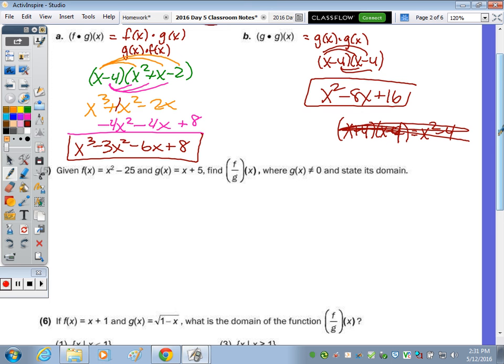Number 5. So we're going to divide polynomials. So we're going to take the F of X function, which is X squared minus 25. And we're going to divide it by the G of X function, which is X plus 5.